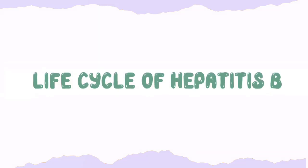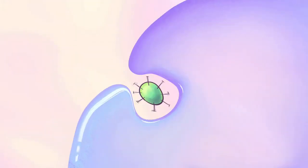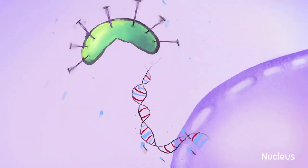Now let us move to the life cycle of hepatitis B virus. The life cycle starts when the virus gets inside the cell by endocytosis. First it will uncoat and release its components inside the nucleus.